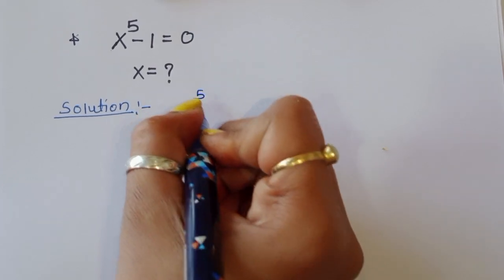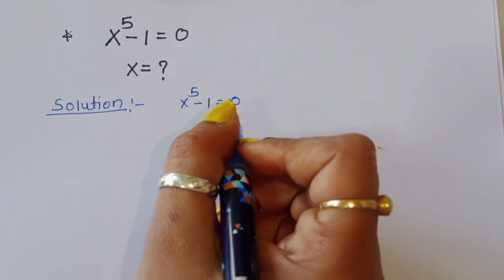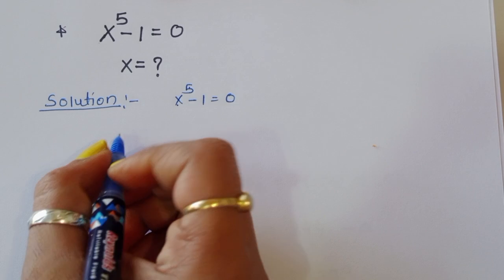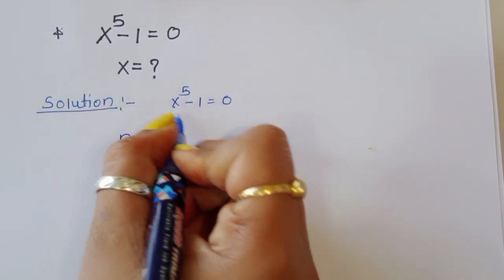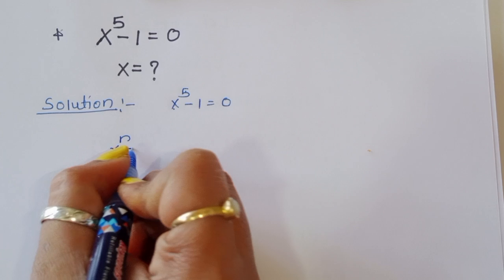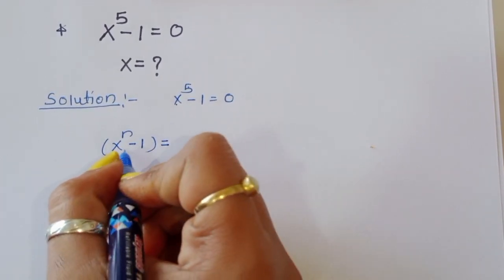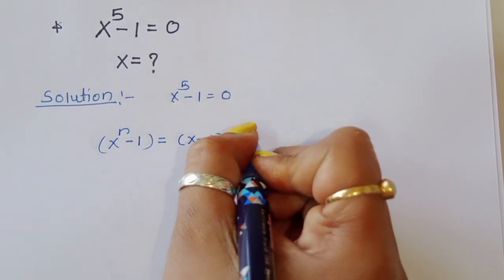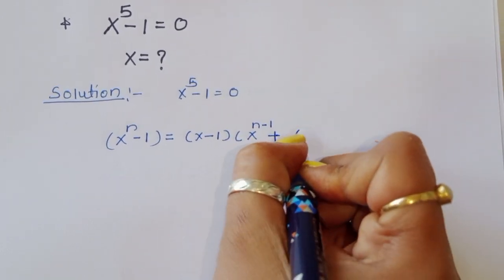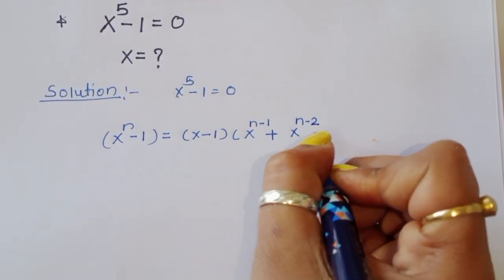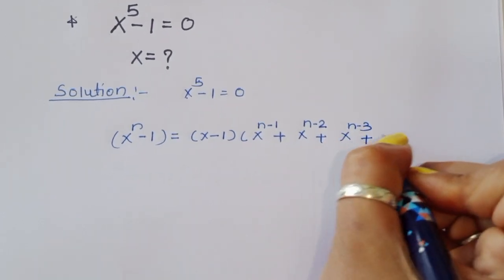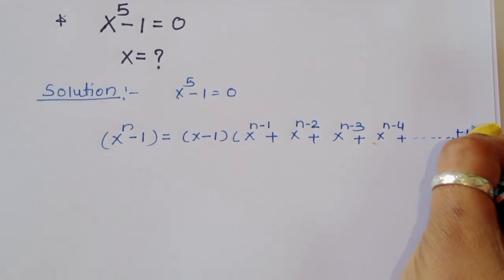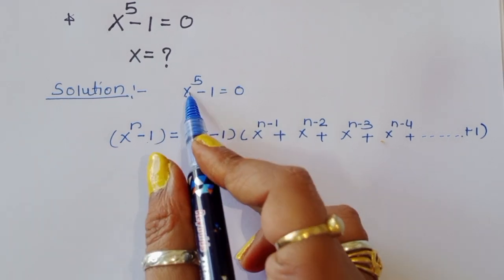x^5 - 1 = 0 is the question. We know the formula: x^n - 1 = (x - 1)(x^(n-1) + x^(n-2) + x^(n-3) + x^(n-4) + ... + 1). This is the formula we will use here.